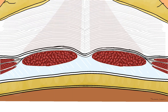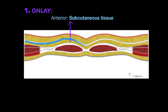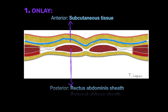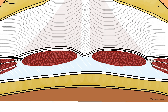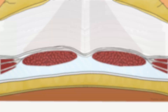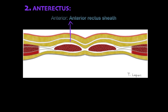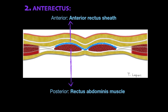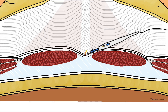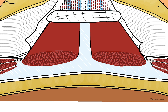The onlay plane is composed anteriorly with subcutaneous tissue and posteriorly with the anterior rectus sheath and external oblique. The typical position of the mesh is in the supraponeurotic plane. The ante-rectus plane is formed by the anterior rectus sheath in the anterior plane and the rectus abdominis muscle in the posterior plane, as described in the Chevrel technique.